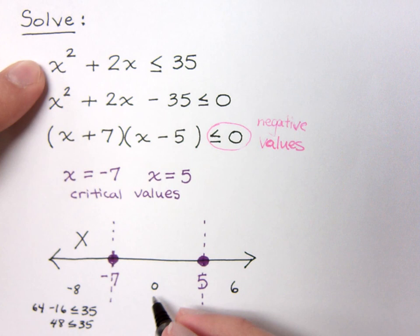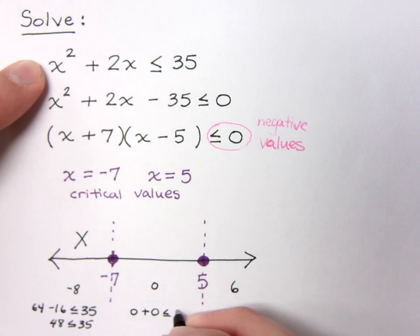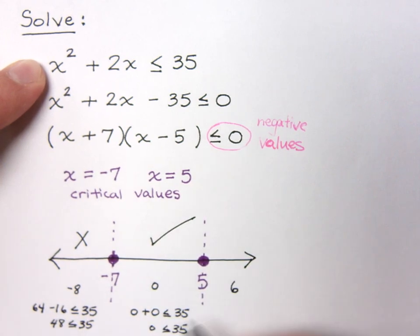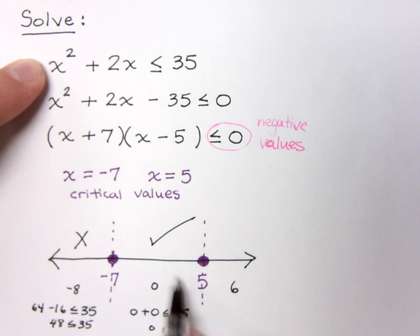If I plug in 0, I have 0 plus 0. Is that less than or equal to 35? And, of course, the answer is yes. 0 is less than or equal to 35. That is a true statement, so I'm going to check that area. Now, picking 0 means I could have picked anything in between these two values, and it still would have been true. It still would have worked out against the original.